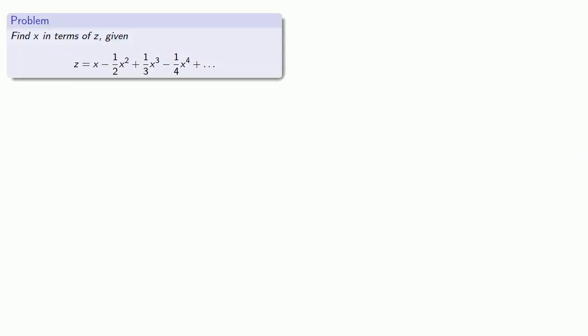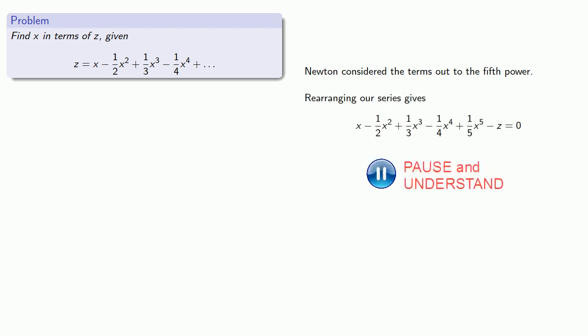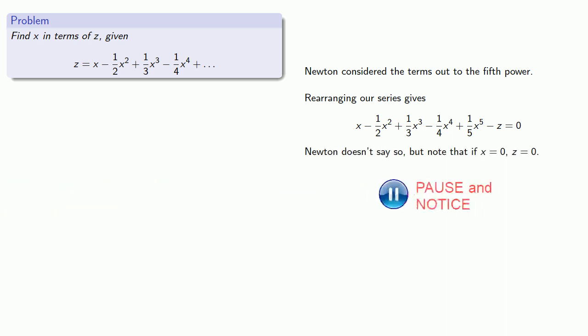Now, Newton goes through the explicit steps for that second inversion. So, let's take a look at that. We want to find X in terms of Z, given that Z can be expressed as a power series in X. So, Newton considers the terms out to the fifth power. Rearranging our series gives us our fundamental equation. Newton doesn't say so, but note that if X is equal to zero, Z is also equal to zero.